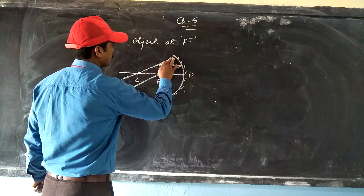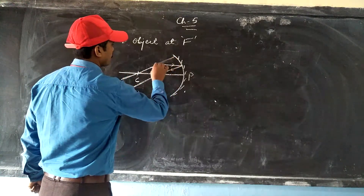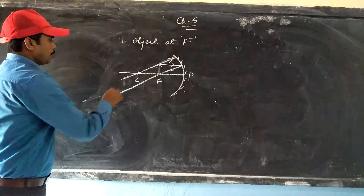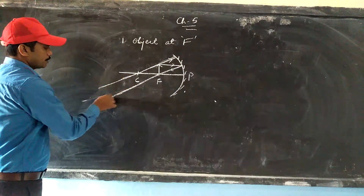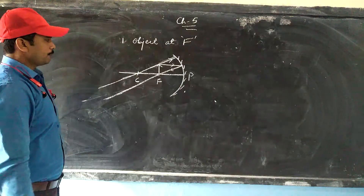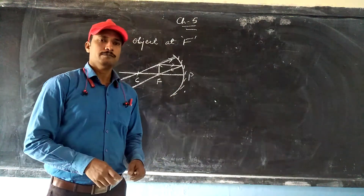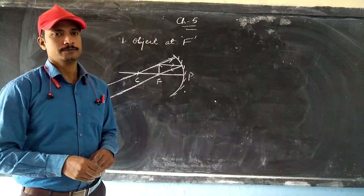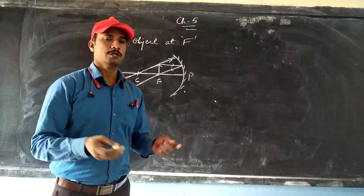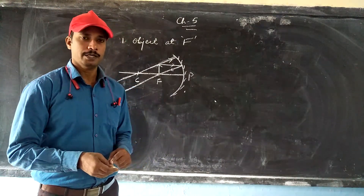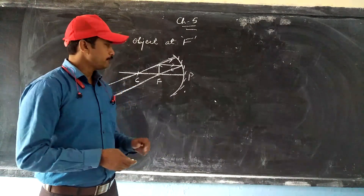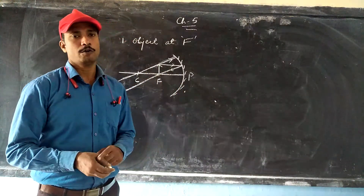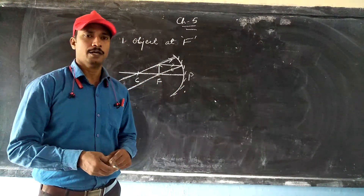Now, these two reflected rays will not meet near the mirror — they will be meeting at infinity. So we can say the position of the image will be at infinity. The image will always be bigger than the object, and its nature will be real and inverted.